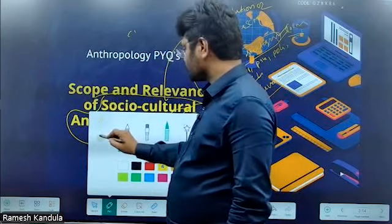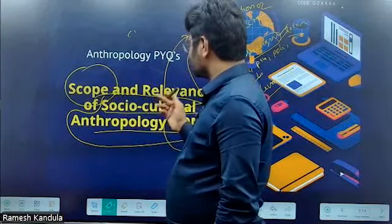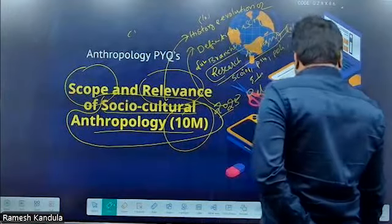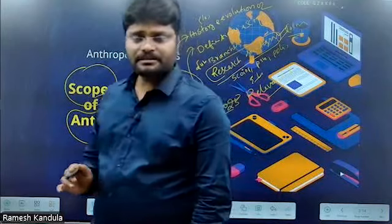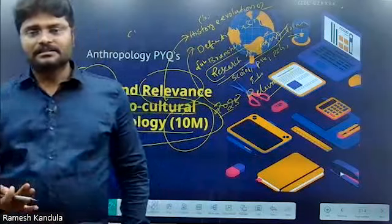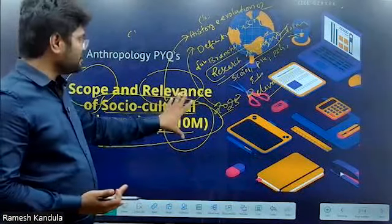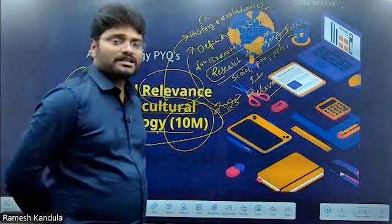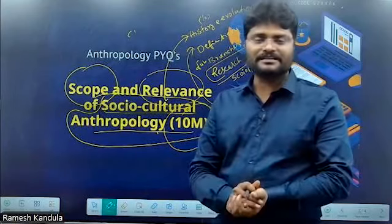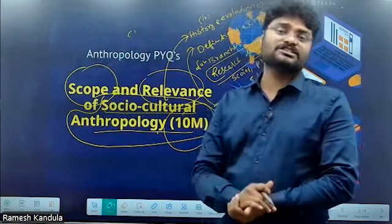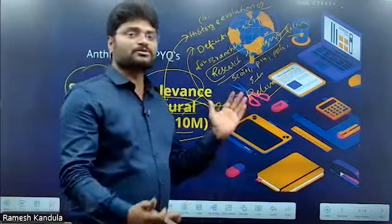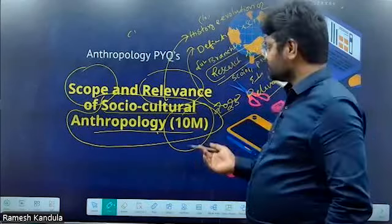Your focus of attention while writing should be on whatever they are asking. Simply, you can see here — it is scope and relevance of socio-cultural anthropology. The question seems to be very easy, but it can vary. It's not a direct concept. Relevance means you should understand the knowledge of socio-cultural anthropology and how it helps us to resolve everyday problems, or the current problems faced by humanity — how this socio-cultural anthropology helps us to resolve. That is individual-specific, which is why it is a somewhat tricky question.